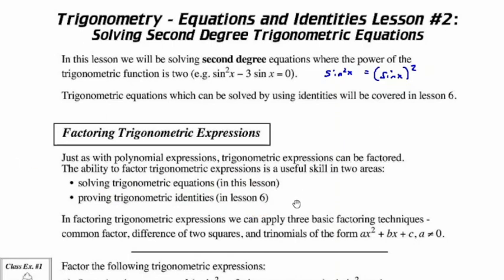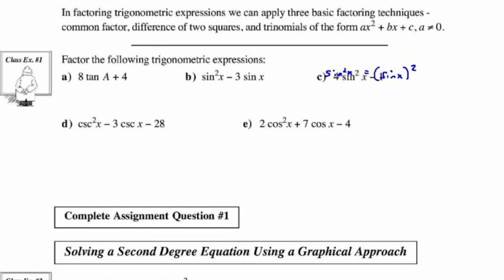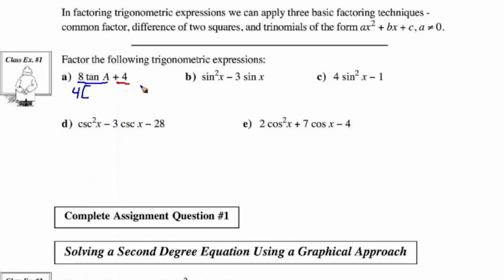Let's take a look at factoring trig expressions. Basic factoring techniques include looking at the common factor, checking for a difference of two squares, and looking at trinomials of the form ax squared plus bx plus c where a is not equal to zero. For this first example, let's factor 8 tan a plus 4. We can find a common factor of 4, giving us 4 times the quantity 2 tan a plus 1.